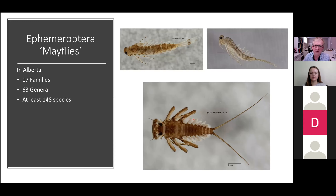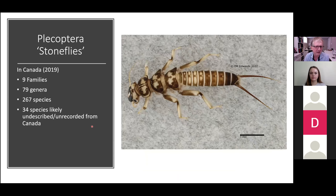Those are the gills on the side, for those who don't realize that. So what would happen to an organism like this if it was in a silty river getting all of its gills covered with silt? We'll come back to that one. Next: stoneflies.